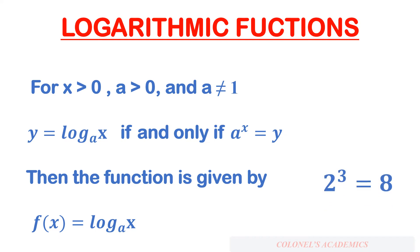Here you can see 2 to the power of 3 is equal to 8. Number 8 is x here, and x equals 8 is greater than 0 — the first condition is satisfied. The base here is 2, so 2 is greater than 0, which is satisfied, and also 2 is not equal to 1, so that condition is also met. All 3 conditions are met. So f(x) equals log x to the base a, that is f(8) will be equal to log of 8 to the base 2.